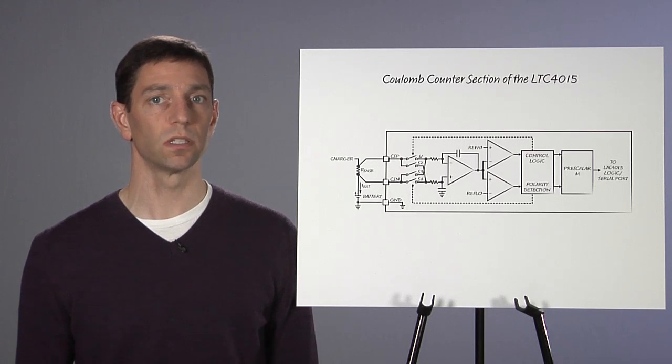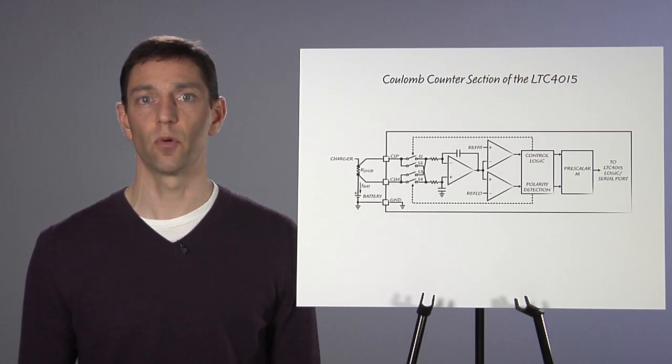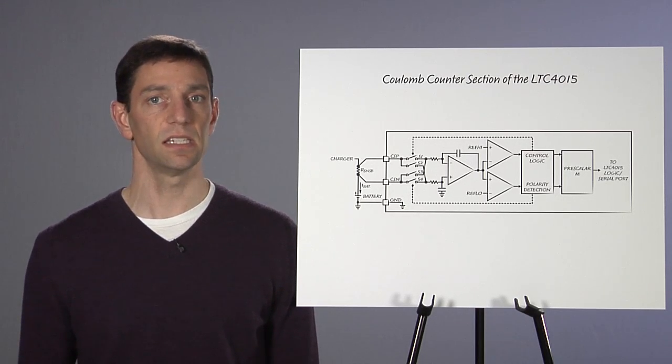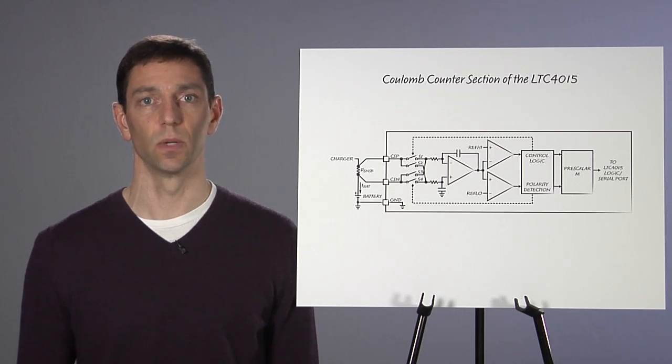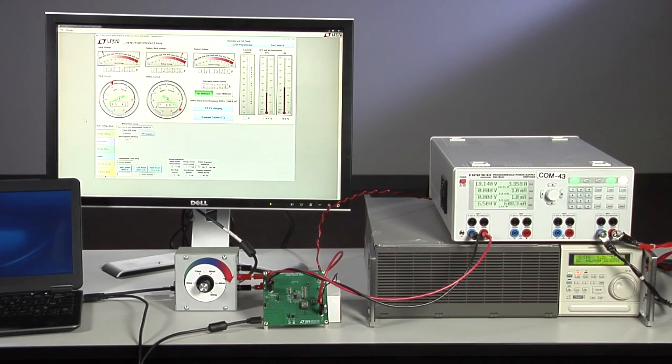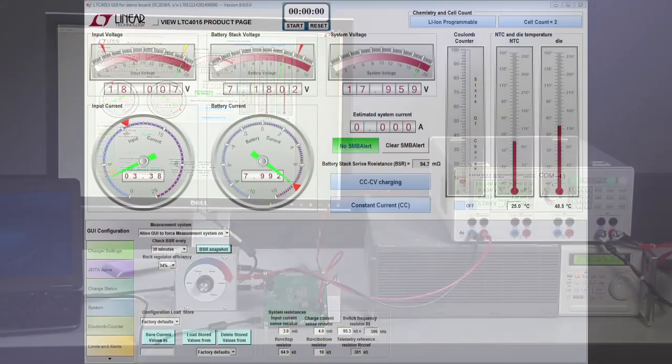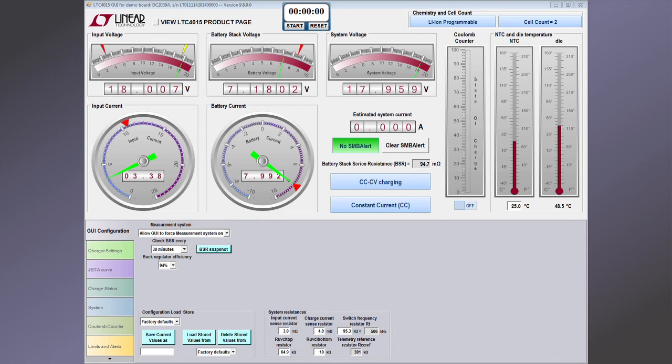Now let's look at some real world examples using our LTC4015 demo board, DC2039A and its GUI. The default demo board configuration here is set to charge a stack of two lithium-ion batteries as shown in the upper right corner of the GUI. The input, battery and system voltages can be read across the top of the screen while the dial gauges show the input and battery currents.